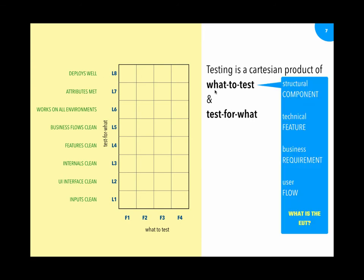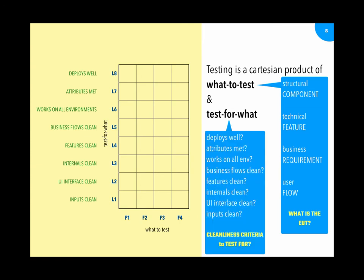What to test is really an entity which could be at any level. It could be a basic building block like a structural component, a collection of components forming a technical feature, a set of technical features forming a business requirement, or a set of requirements that a real end user uses — which is really the user flow. So 'what to test' forms the x-axis.